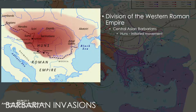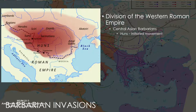Some of these tribes were actually coming in to seek refuge from other tribes, and some were even given territory within the Roman Empire. The Romans began to employ some of these people within the army to defend the provinces. In the late Roman Empire period, this becomes a pretty standard practice to use foreign troops to defend the borders.